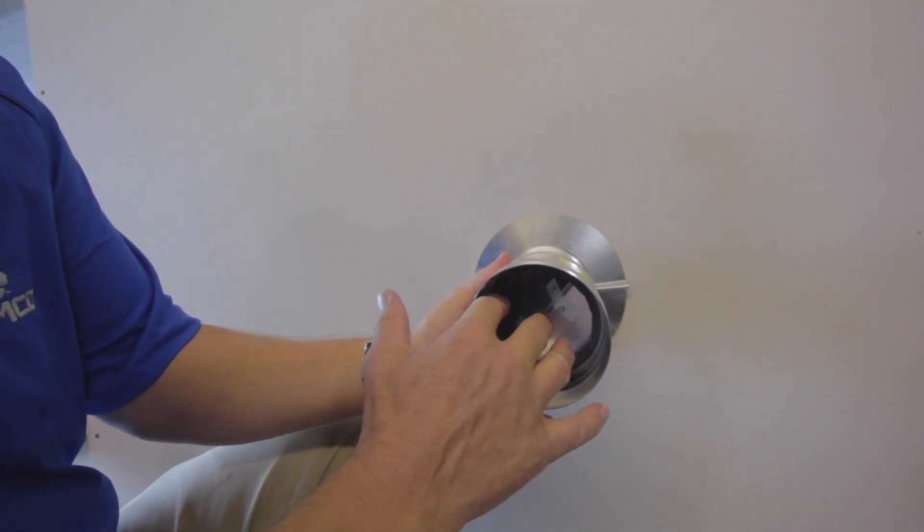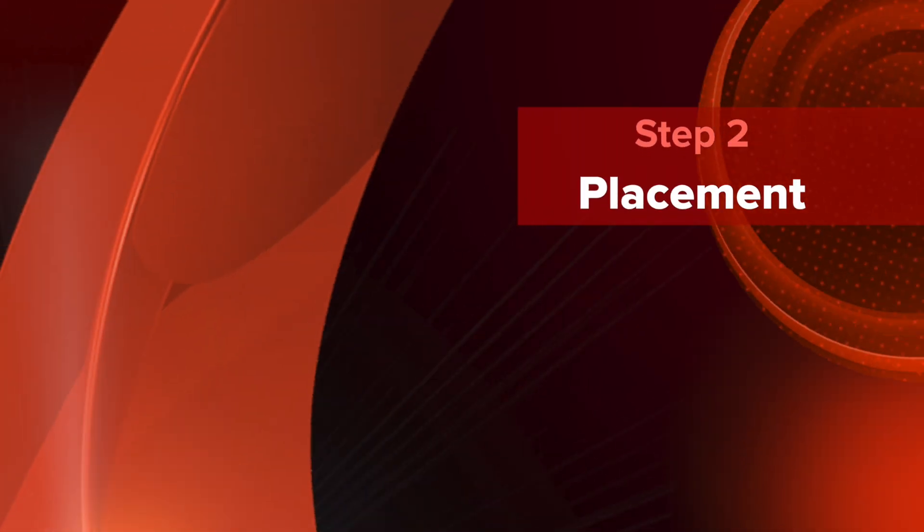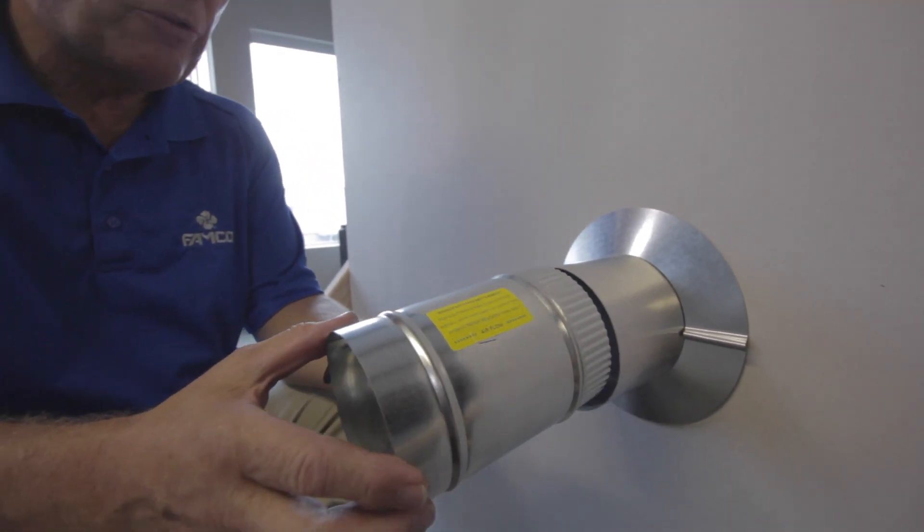Now we're ready for placement of your damper to your ventilation system. Insert the crimp side of your damper toward your wall. You'll find that it is slightly smaller and will more easily fit into your vent.